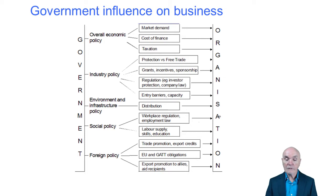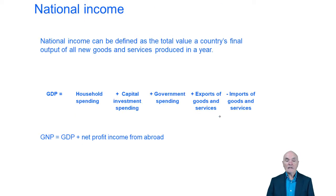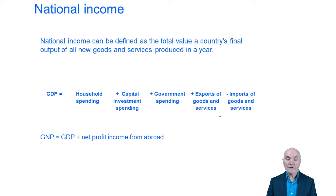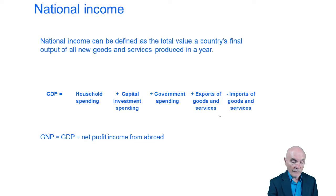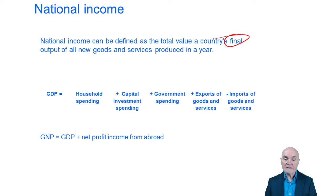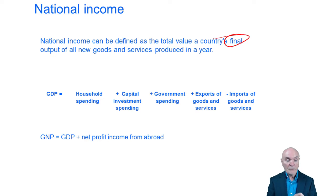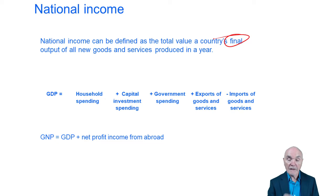So there's a myriad of ways in which the government can influence the economy and businesses. National income is defined as the total value of a country's final output of all new goods and services. It is important to remember it is final output — if a company buys raw materials and incorporates them into a product then sells it, you'd be double counting the raw material element.